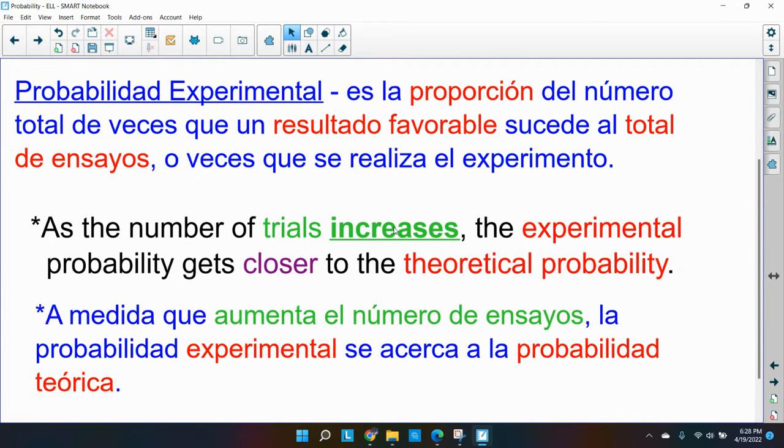As the number of trials increases, the experimental probability gets closer to the theoretical probability. So in theory, the more that you do it, the closer you get to the actual theoretical probability.